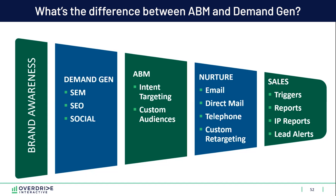This is where the key differentiator comes in. In demand gen, you're generating net-new leads. In ABM, you are generating engagement to grow your sales pipeline and to grow the lead score of these various people within your database. To me, the difference is that in demand gen I'm targeting people based on content and a little bit on intent, but in ABM I'm really targeting people on intent combined with the fact that I know who they are and what companies they work at.